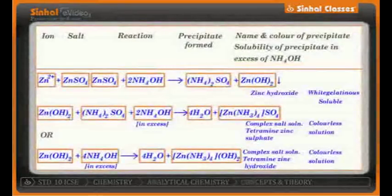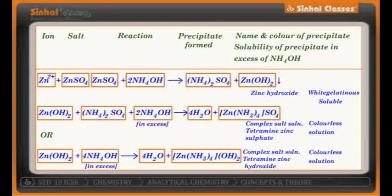Similarly, zinc sulfate treated with excess ammonium hydroxide will first give you a white gelatinous precipitate of zinc hydroxide along with ammonium sulfate. Now, if you add excess ammonium hydroxide to the entire product, this zinc hydroxide gelatinous precipitate will dissolve and you will get a colorless solution of tetra amine zinc sulfate.